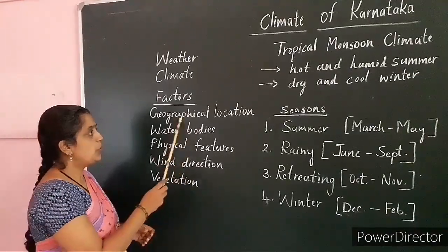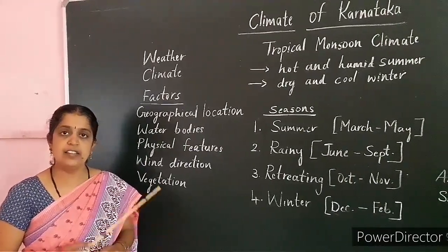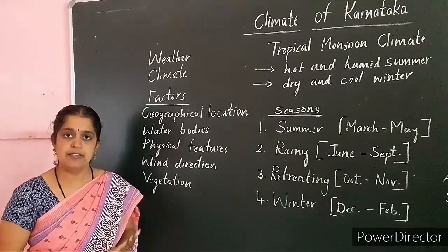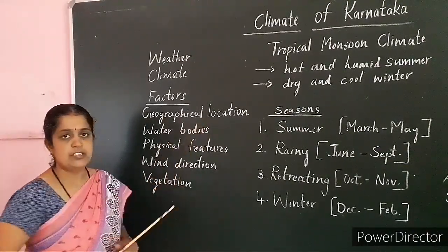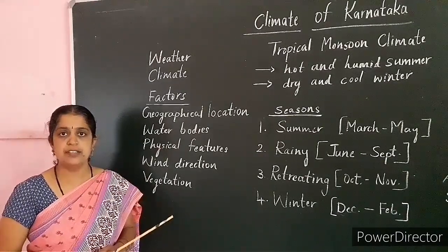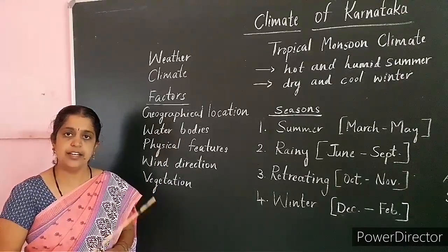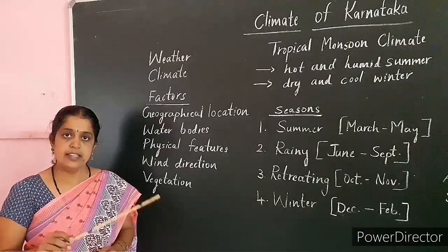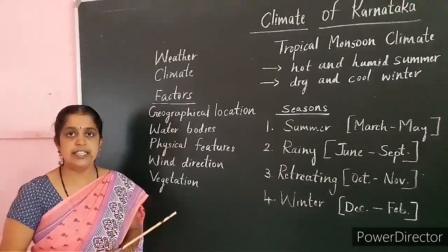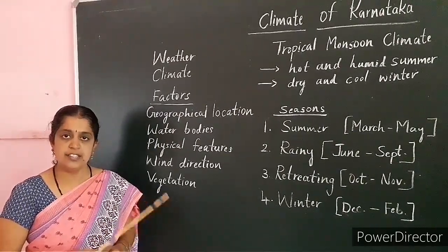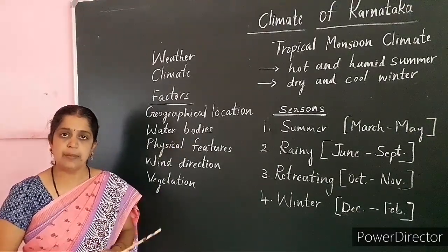The first factor is geographical location — it refers to which latitude the area is situated in, whether it is in the tropical zone, subtropical zone, or the temperate zone. The second factor is water bodies — seas and oceans. Whether any sea or ocean is near that place matters because ocean currents affect the climate of that region.